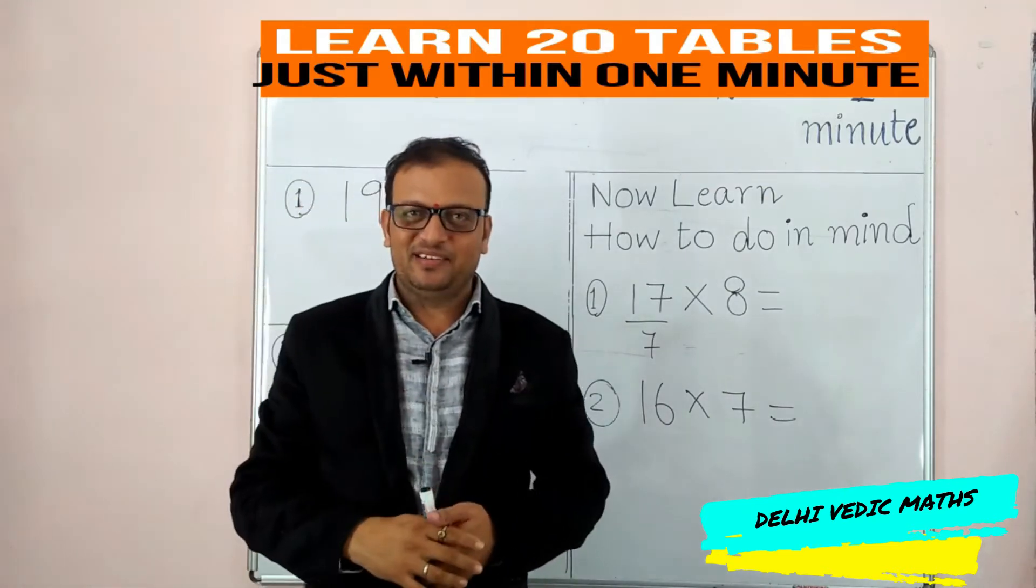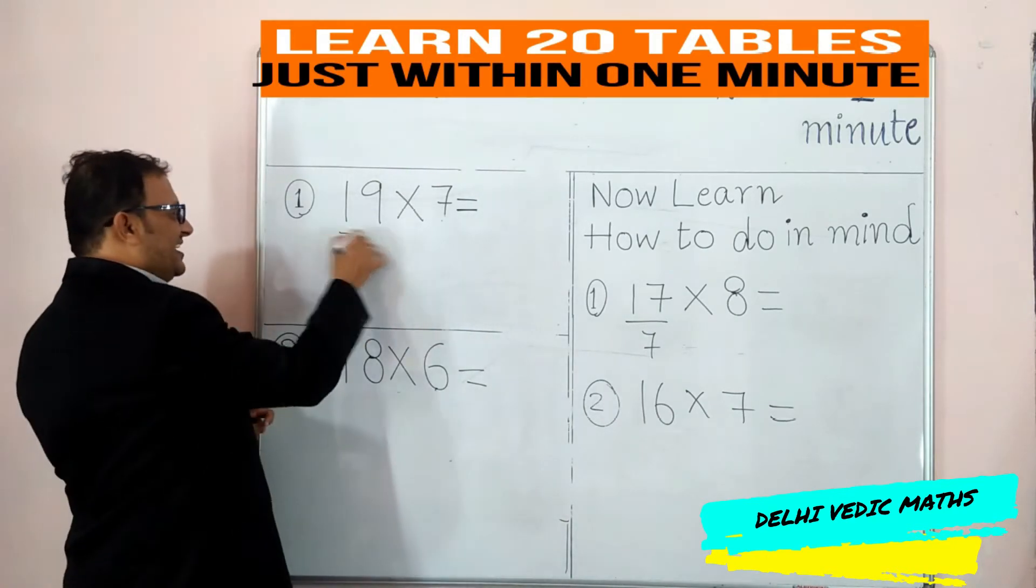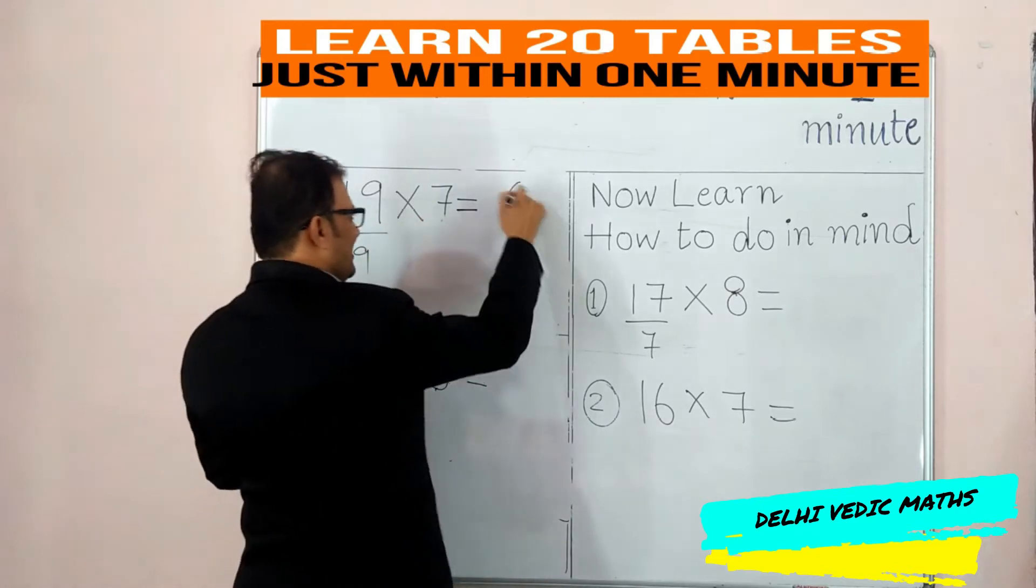But in the first place, we have 20 tables. We will give you 19 tables, we will give you 9 tables. 9×7 is 63.